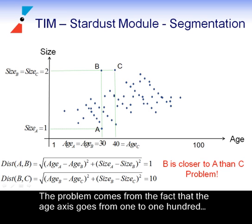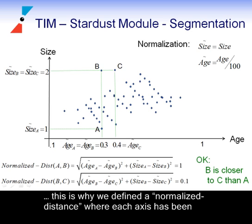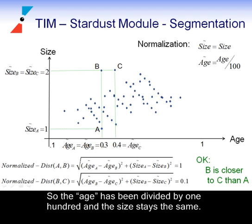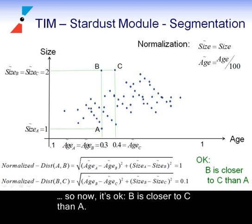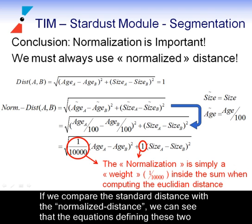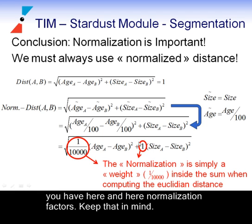The problem comes from the fact that the age axis goes from 1 to 100 and the size axis goes from 1 to 2. The range of the two axes must be similar in order to have a meaningful distance. This is why we define a normalised distance, where each axis has been normalised to obtain more or less the same range. So the age has been divided by 100 and the size stays the same. Using this new normalised distance, the distance between A and B is 1 and between B and C is 0.1, so now B is closer to C than A. As a conclusion, normalisation is important — we must always use normalised distance. The only difference between the standard and normalised distance equations is the normalisation factors.